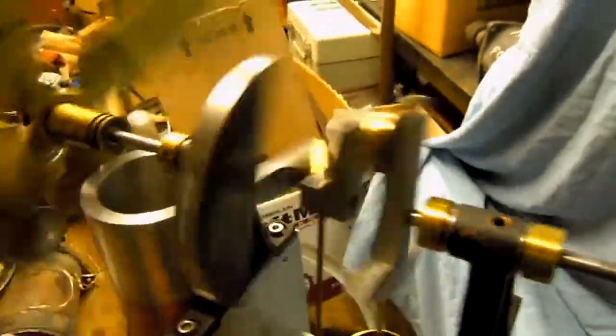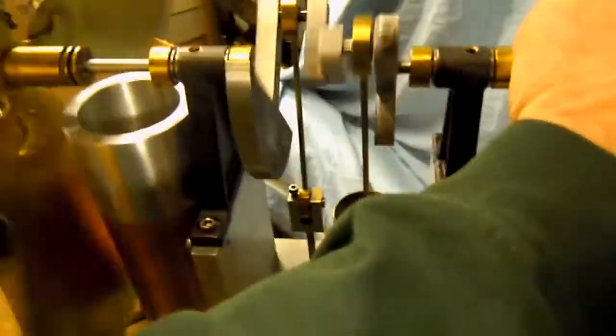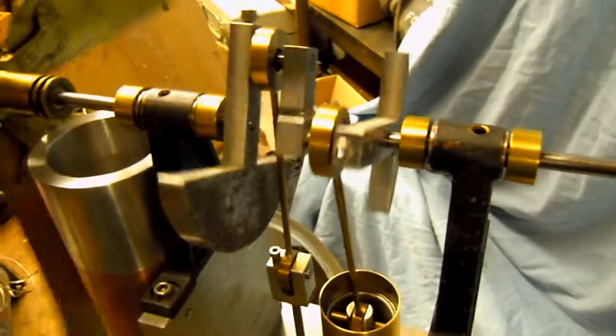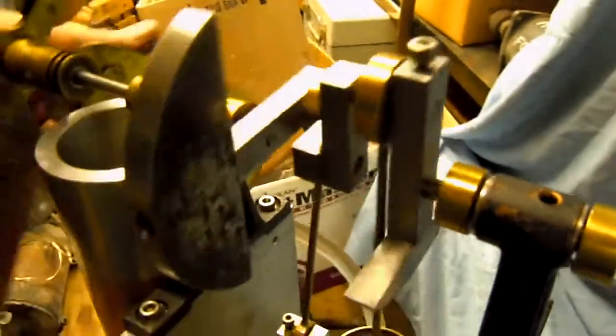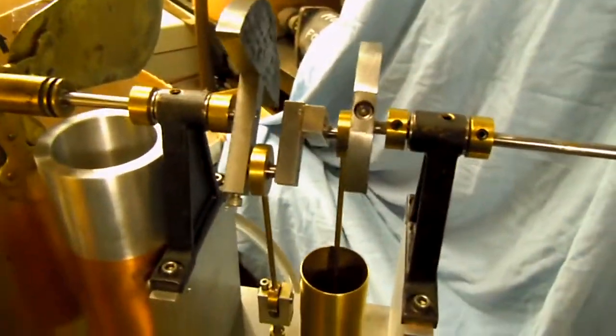The counterweights seem to have helped and it's just running on residual heat right now. If I stop it, you can see the counterweights - one's a lot bigger than the other one. The heavy one is for the displacer, and if I flick it she'll start up again.